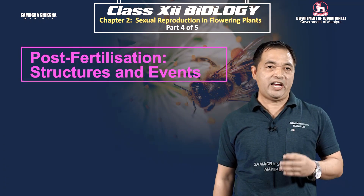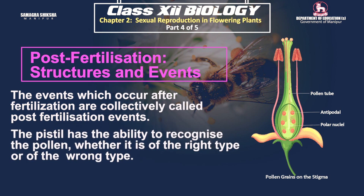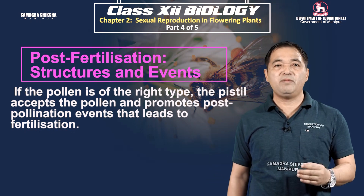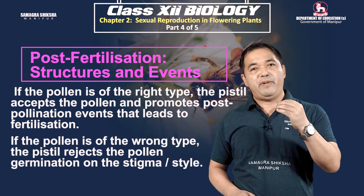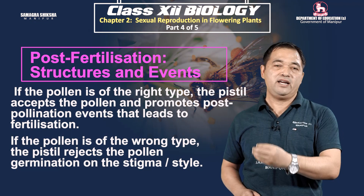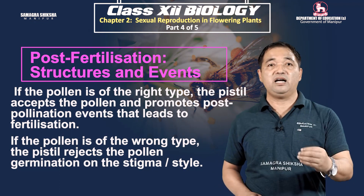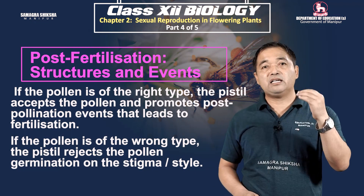Pollination is the transfer of pollen grains to the stigma. Pollen grains are transferred to the stigma of the same or different plant species — for example, mango, rose, apple, and sunflower. The pollen grains land on the stigma of the pistil.